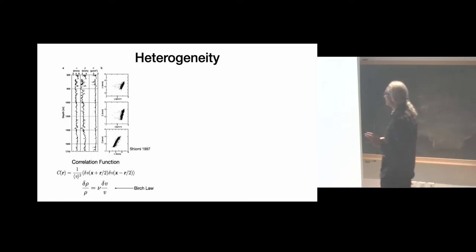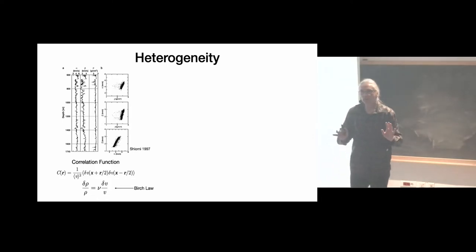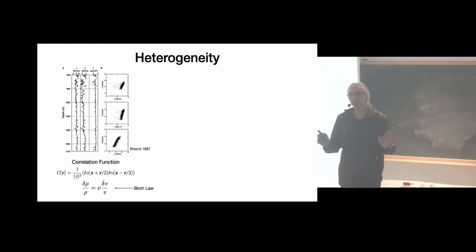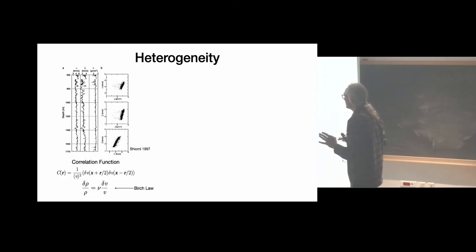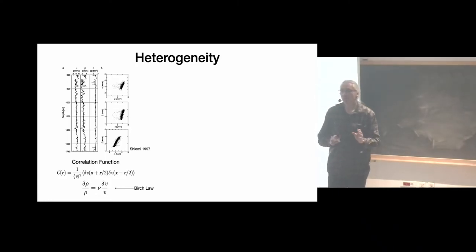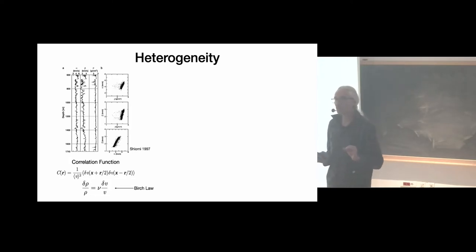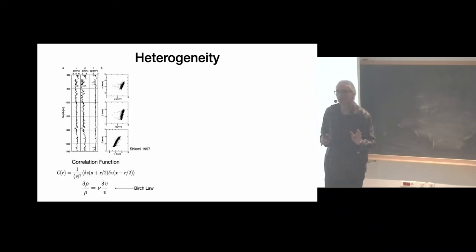So far I've discussed single scattering, which is already complicated but totally unrealistic for us. In the Earth we don't have isolated objects in a homogeneous medium — we have a lot of heterogeneity. I want to give you a few general ideas about heterogeneity in the Earth, mostly applying to the crust at some depth.